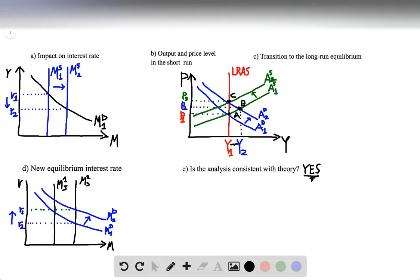Part C asks, when the economy makes a transition from its short run equilibrium to its new long run equilibrium, what will happen to the price level? Also, I forgot to mention that at point B, not only the output expands, but also the price level increases from P1 to P2.